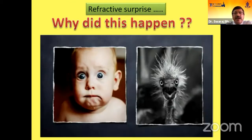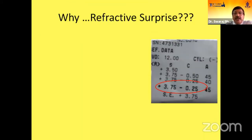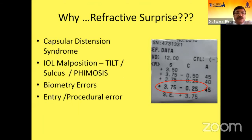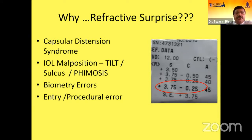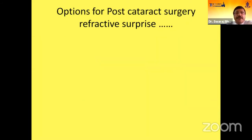Why does this happen? In the early morning if you see an autoref paper like this — it's a nightmare. The causes include capsular distension syndrome, IOL malposition like tilt, sulcus, phimosis, biometry errors, and entry or procedural errors. If the person is copying from the machine without a printout, there may be errors, and if you do a bad or wrong biometry, you will have a definite refractive surprise.